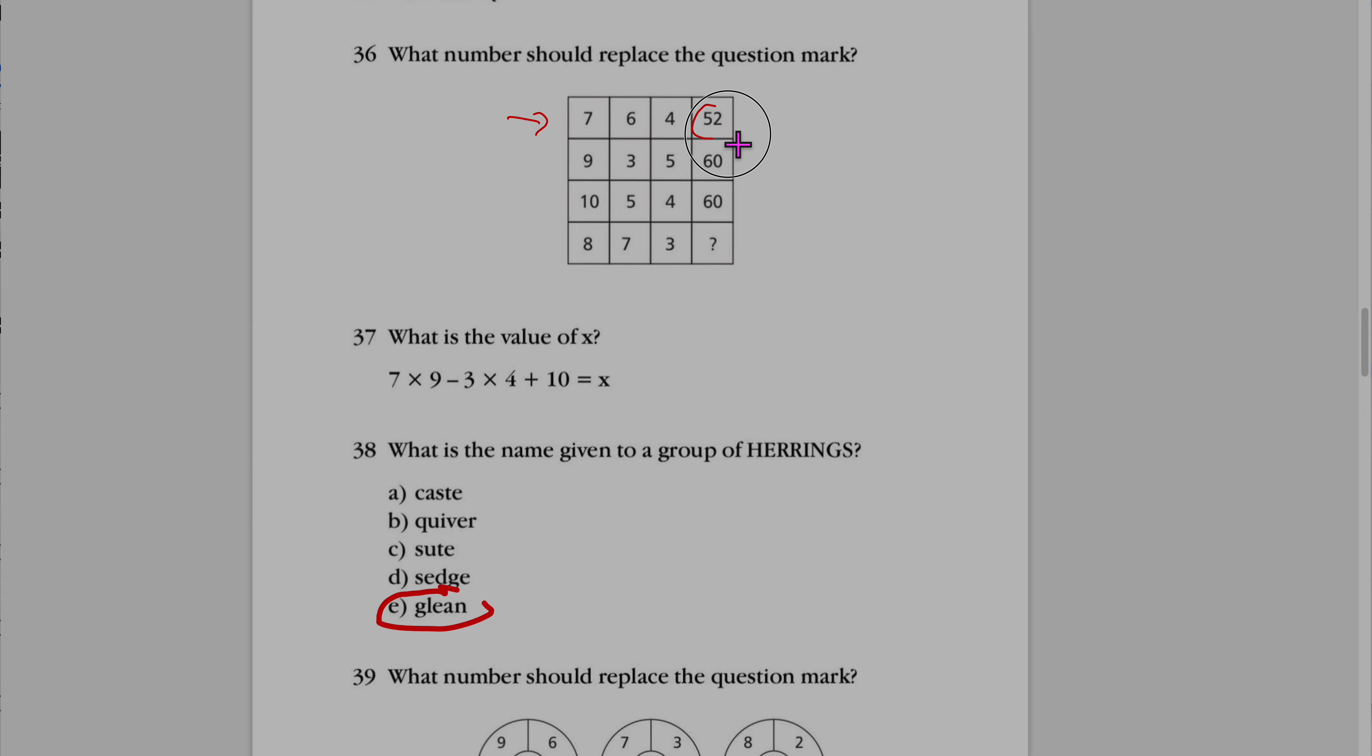So how do you get to 50? 52? How do you get to 60? Right? The only way is it's 6, 15.